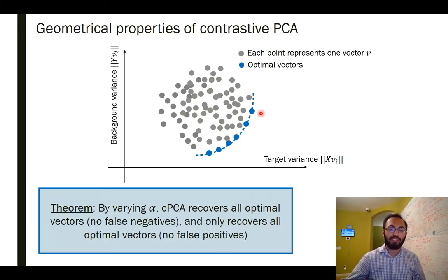Here's the great thing about contrastive PCA. We can prove that by varying alpha, this hyperparameter that I mentioned earlier, CPCA can recover all of the optimal vectors. So for every vector out here, there will be one value of alpha that returns that to you. So there are no false negatives. By sweeping alpha, you can recover all of these. And what's really nice is that no value of alpha will ever give you a vector out here. You have no false positives. You only get optimal vectors with our algorithm.